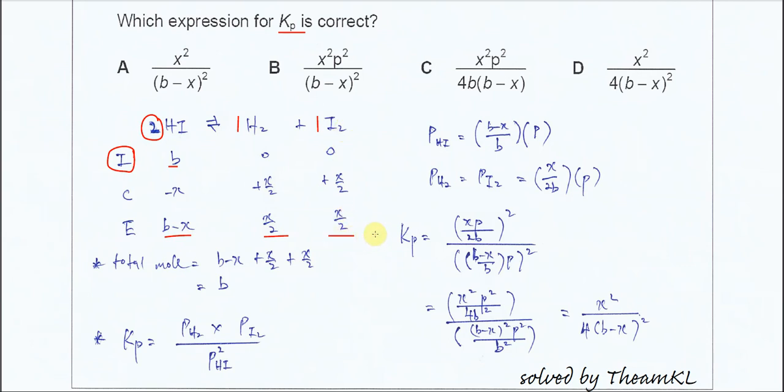Another very important thing we need to get is the mole fraction. In order to get the mole fraction, we must get the total mole. So we sum up the moles at equilibrium: B minus X plus X over 2 plus X over 2. We end up with B. B now is the total mole for this mixture.